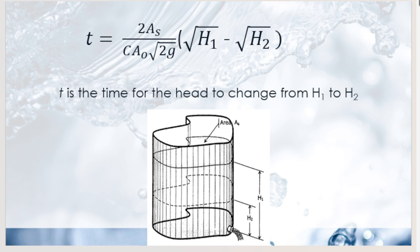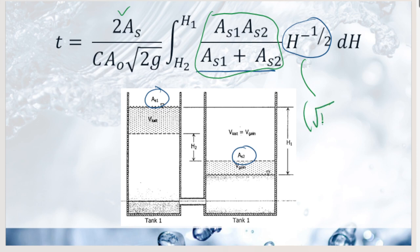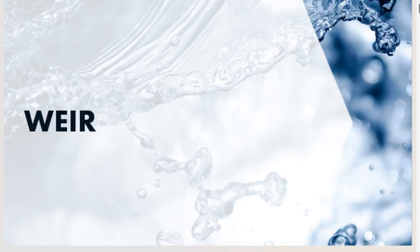A suppressed or full-width weir has its length equal to the width of the channel, so the nappe suffers no contraction — it maintains a rectangular shape with equal sides. The draw-down or drop-down curve is the downward curvature of the liquid surface before the weir. The head is the distance between the liquid surface and the crest of the weir, measured from upstream before the draw-down.